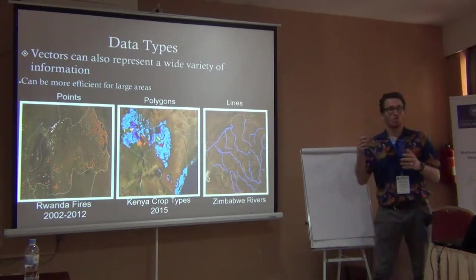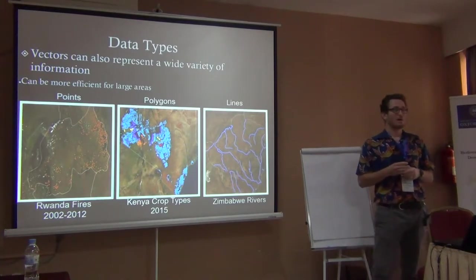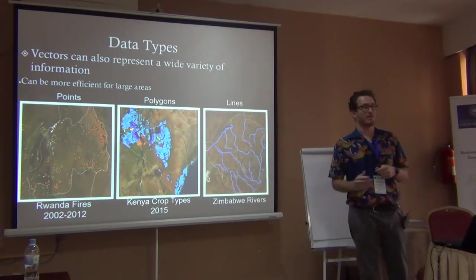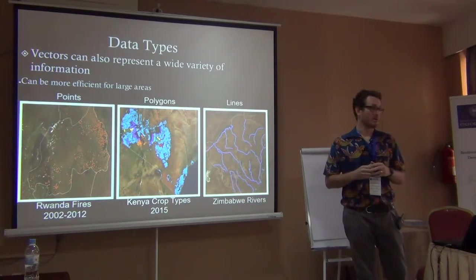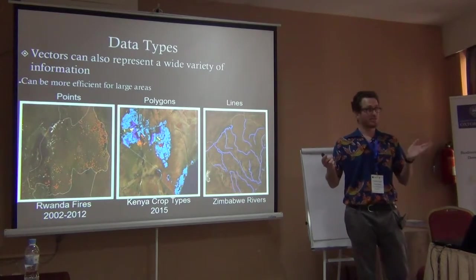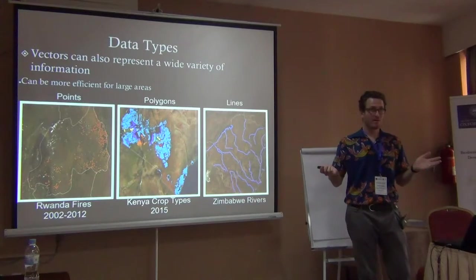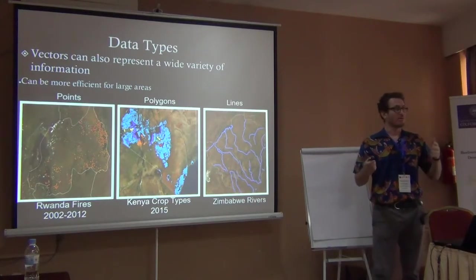When we're thinking about the data we want to analyze, a lot of times we know exactly what format it should be. What format should a road be? A line — which is vector. A river? Also vector.